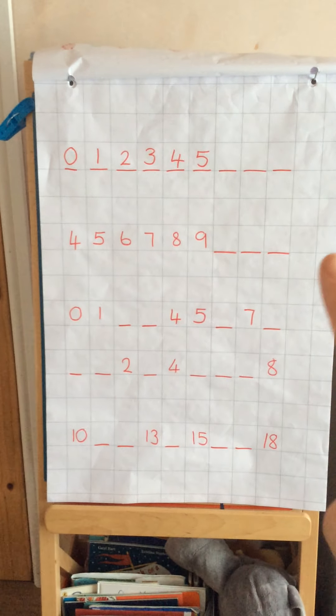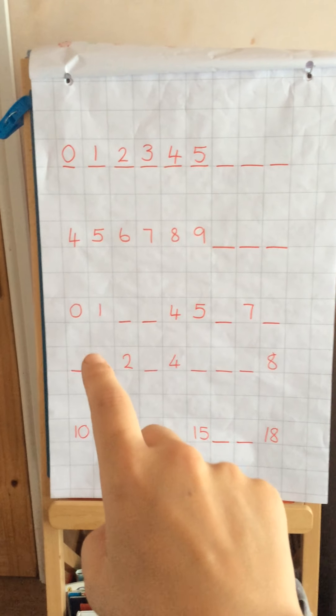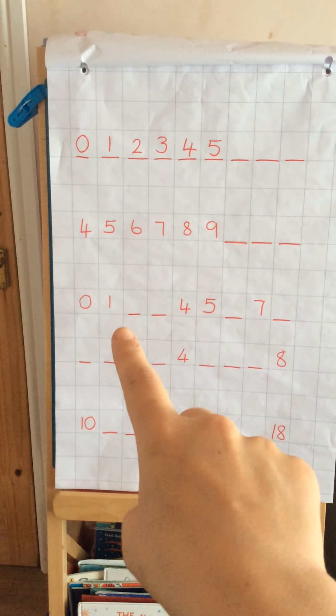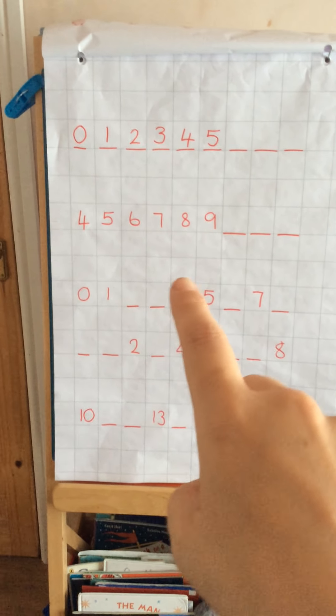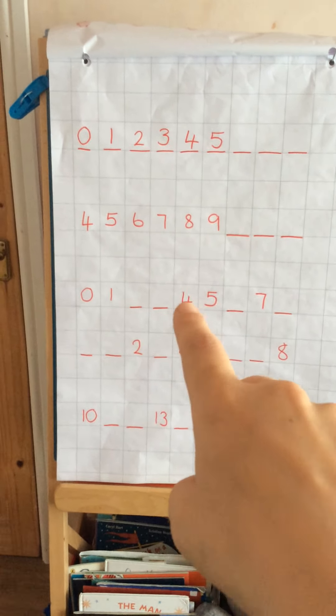Okay, this time we start at zero: we've got zero, one, but then we haven't got a number, then another number, then we've got three, then four, five, no number, seven - so you need to work out what numbers go in those gaps. This time we don't start with numbers, so it's something, something, then two, then something, then four, then something, something, something, eight - need to work out what the numbers are. And then this one starts at ten: ten, something, something, 13, something, 15, something, something, 18.